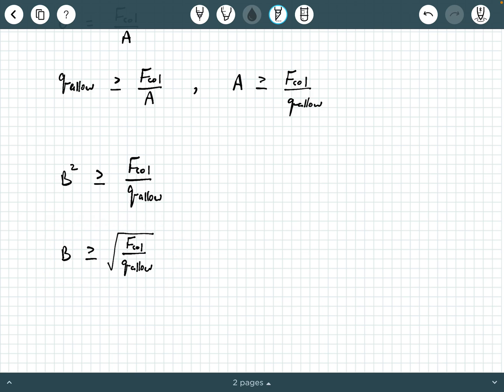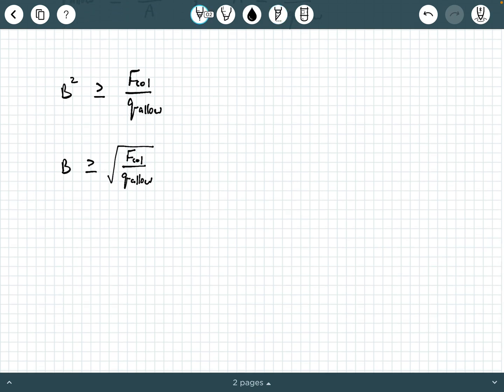So now for this problem, we've determined this handy formula here. So we have these values. We have F call and we have Q allow. So let's substitute that in. We know that F call was 100 kips. So we can say B is bigger than or equal to the square root of 100 kips divided by Q allow, which was given as 3,000 PSF. So should we write 3,000 PSF here? Think about it.